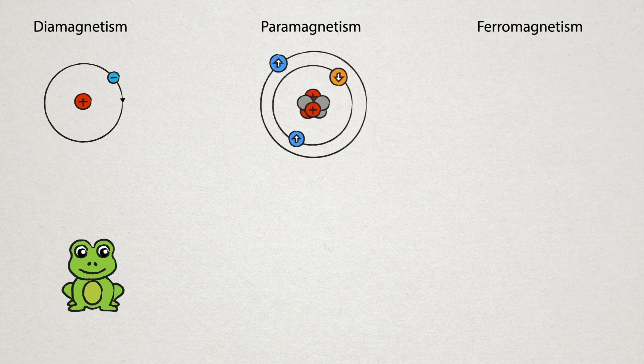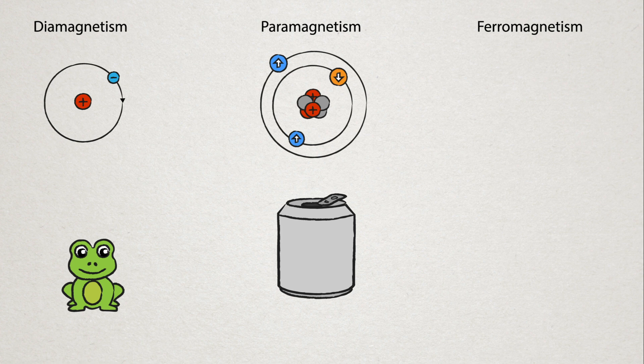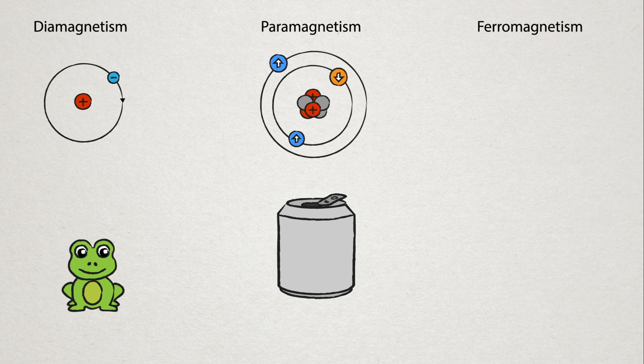The next form of magnetism is paramagnetism. This originates from the electron's atoms having a magnetic moment or a spin. When there is an even number of these electrons, the spins tend to point in the opposite direction and thus cancel out.